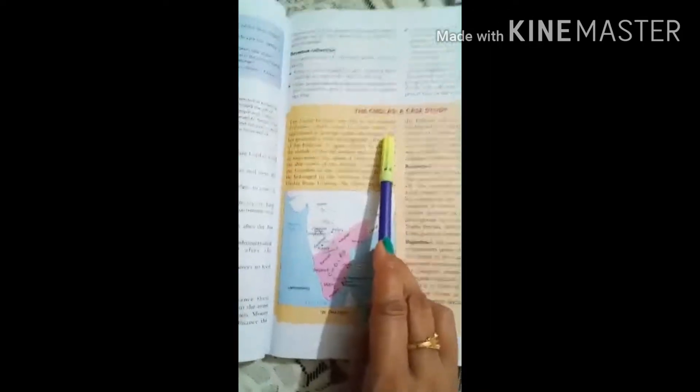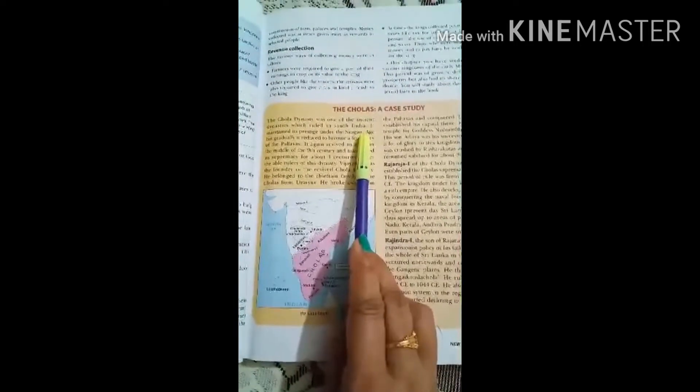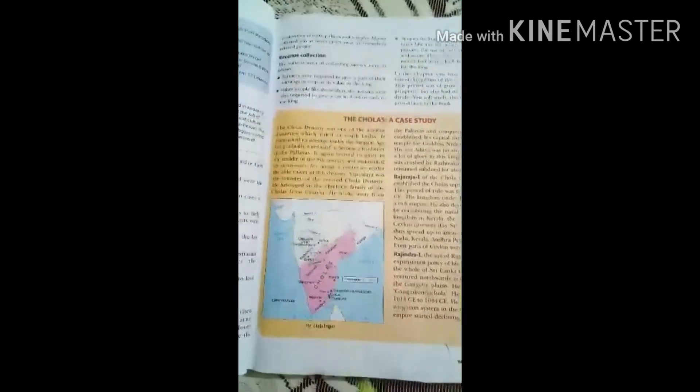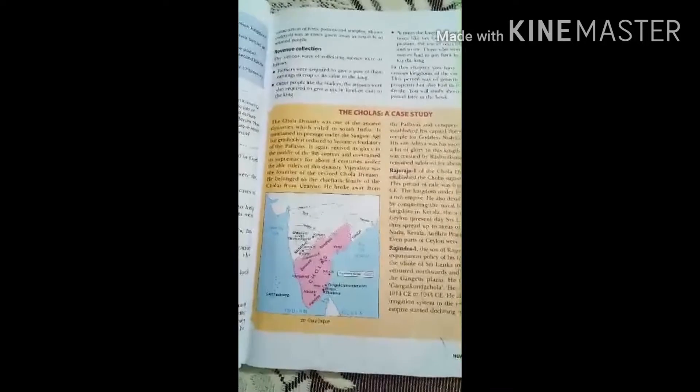Now Chola dynasty is said to be a very ancient dynasty, but we are not going to read that ancient dynasty. It was there in Sangam age, which is mentioned here. In Sangam age, we are talking about Sangam age from 300 BC to 7th century.